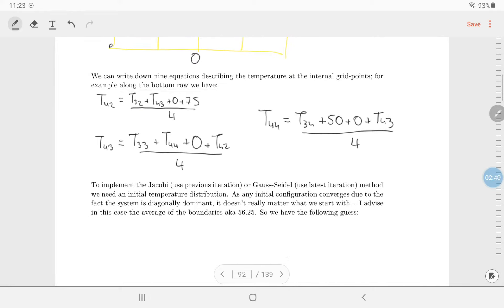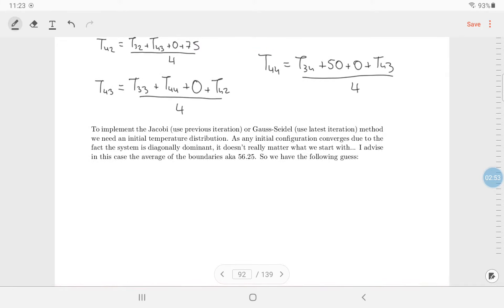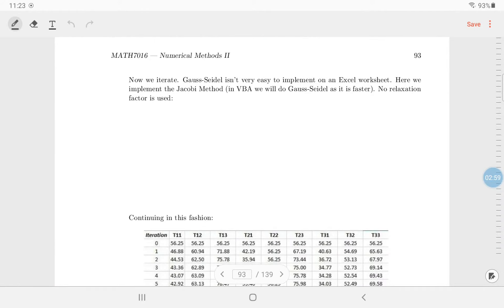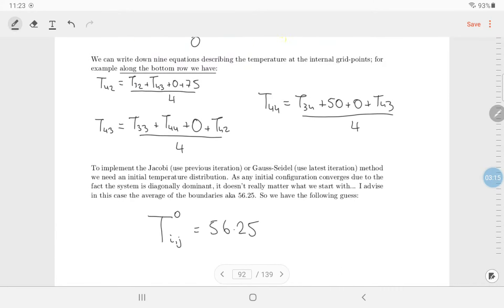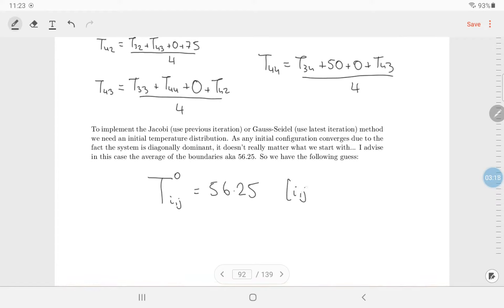T43. What are the adjacent temperatures? I see on top, T33, plus T44, plus underneath zero, and also T42, all divided by four. And the last one, T44 is equal to the top temperature, T34, plus to the right is 50, underneath is zero, and to the left is T43, all divided by four. So to implement the Jacobi method, use the previous iteration, or Gauss-Seidel use the latest. As any initial temperature configuration converges due to the fact system is diagonally dominant, it doesn't really matter what we start with. So I'm going to take the average of the boundaries is 56.25.